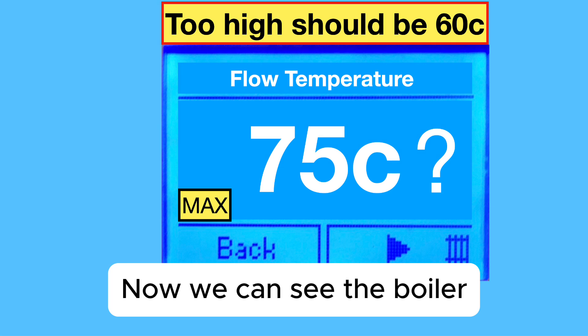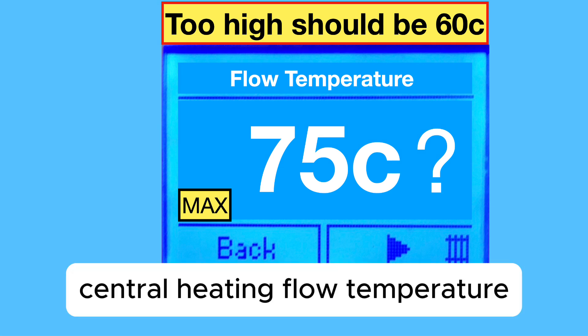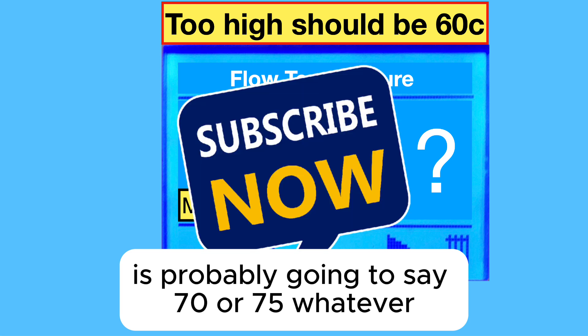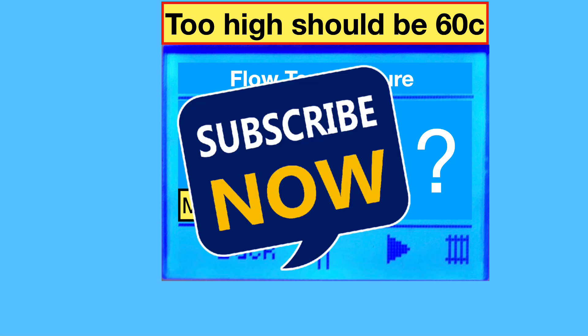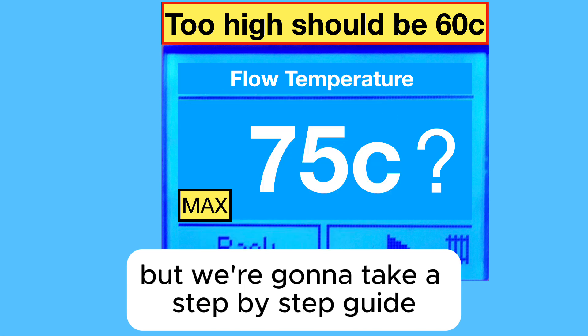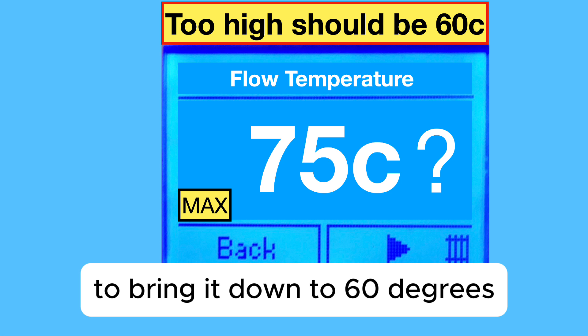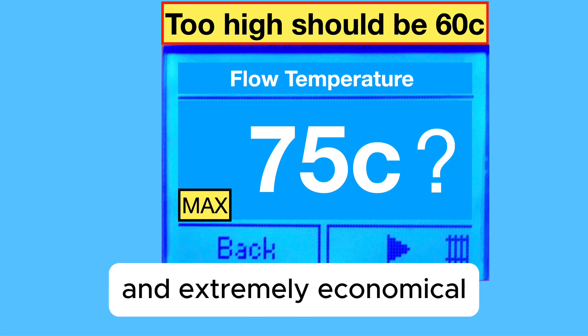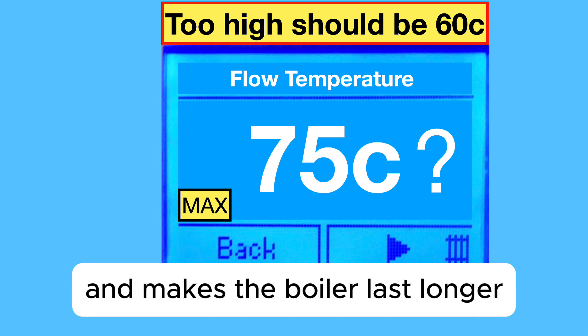Now we can see the boiler central heating flow temperature. It's probably going to say 70 or 75. But we're going to take a step-by-step guide to bring it down to 60 degrees, which makes it lean, green and extremely economical and makes the boiler last longer.